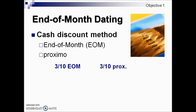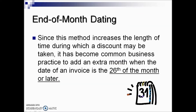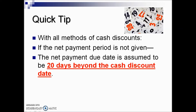Examples might look like these two listed here, and they stand for a 3% discount on an invoice if payment is made by the tenth of the month that follows the sale. Because EOM and Proximo give additional time, there is a common business practice that should the invoice be dated the 26th of the month or later, an extra month is added to the cash discount eligibility. Also, with all methods of cash discount, if the net payment period is not given, common practice is that the net payment due date is assumed to be 20 days beyond the cash discount date.